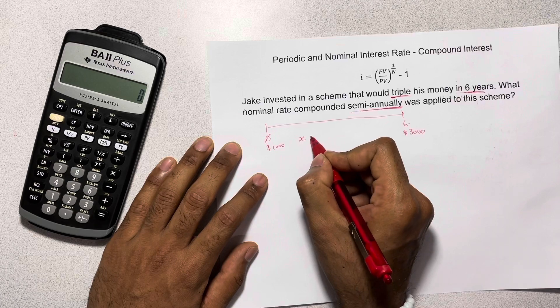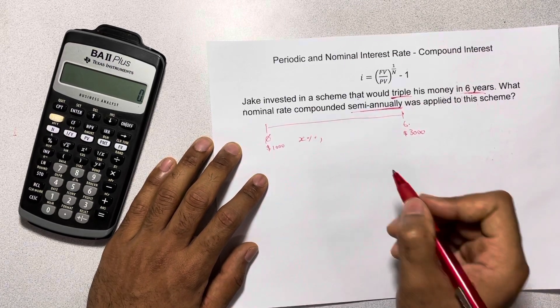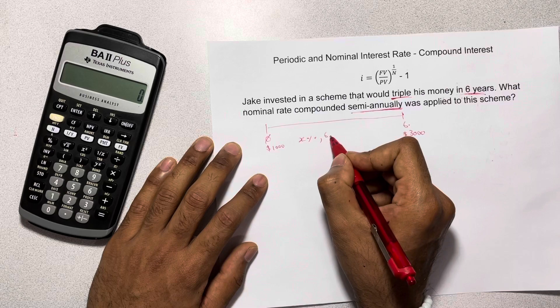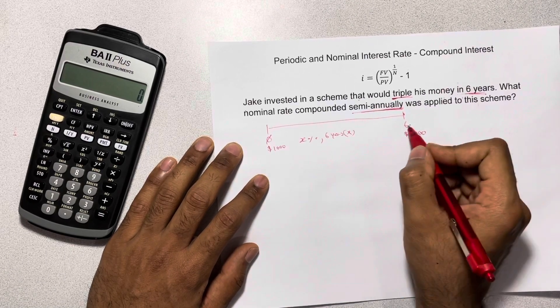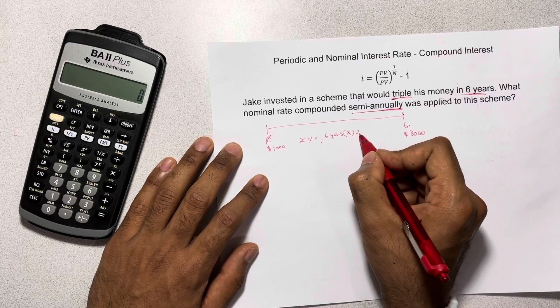So we don't know our percentage, the interest rate, but what we do know is that it was for 6 years and the compounding frequency was semi-annually. So it was twice a year.